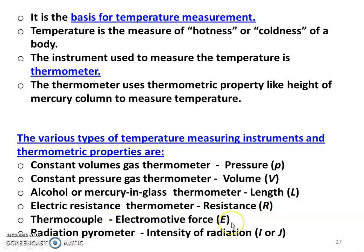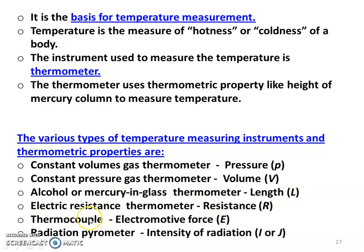Thermocouple uses electromotive force as the measuring parameter. Radiation thermometer uses intensity of radiation as the measuring parameter. So the properties used are pressure, volume, length, electrical resistance, electromotive force, and intensity of radiation — these are the properties used to measure temperature with different thermometers. Among these, alcohol or mercury-in-glass thermometer is very popular. Electrical resistance thermometer and thermocouple are very popular in engineering. Radiation thermometer is also popular for temperature measurement in various industries.